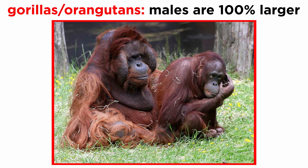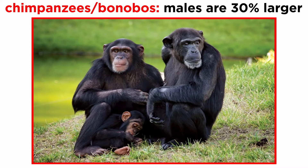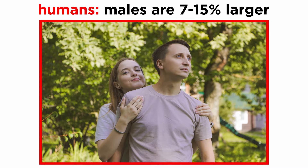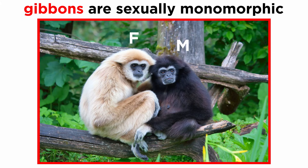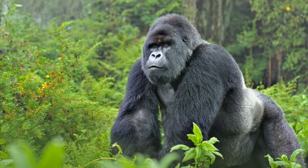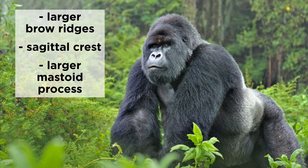Males tend to be larger than females in most apes. In gorillas and orangutans, males are twice the size of females. In chimpanzees and bonobos, males are 30% larger than females, and in humans, males are 7-15% larger than females. Gibbons, the small apes, are the exception and are sexually monomorphic — males and females are the same size. Because of their larger size, male apes may present larger brow ridges, a sagittal crest, and a larger mastoid process.